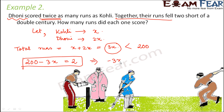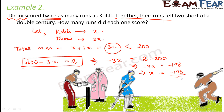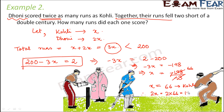So how do we solve this? It becomes minus 3x equal to 2 minus 200, or minus 3x is equal to minus 198, or x is equal to minus 198 divided by minus 3. Minus over minus is plus, so x is equal to 66. This is the score of Kohli — Kohli scored 66 runs. How many runs did Dhoni score? He scored 2 into 66, that is 132 runs. So Dhoni's score is 132 and Kohli's score is 66.